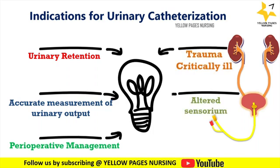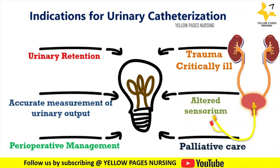Indications for urinary catheterization include: urinary retention that may be acute or chronic; accurate measurement of urinary output for patients with renal failure and hemodynamically unstable cases; perioperative management where patients are posted for surgery during preoperative, intraoperative, and postoperative periods; trauma or critically ill patients; altered sensorium or unconscious patients; and palliative care or end-of-life care.